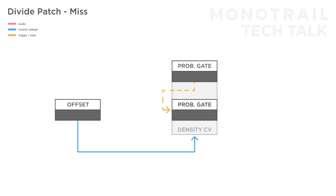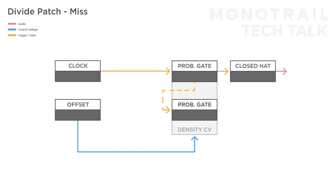The miss setting can create other interesting setups. For example, if you feed a steady clock through a gate to a closed hi-hat, every clock pulse being blocked by the first gate is sent to the second. So you can use that to trigger an open hi-hat, for example.